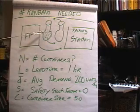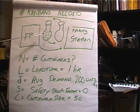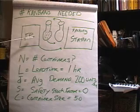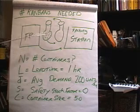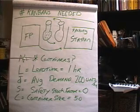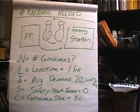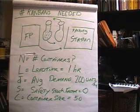What we need to figure out is how many Kanbans — or in this case, how many containers — are needed to go from the finishing process to the packing station. We're going to calculate N, which is the number of containers or number of Kanbans.